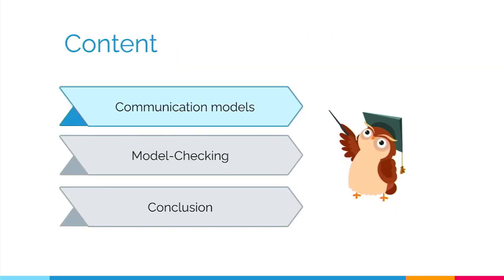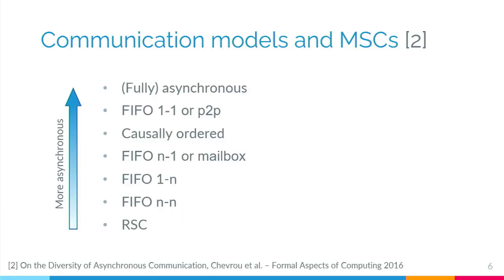After this introduction, I will talk about a couple of the communication models we considered. When I say communication model, I mean the thing that defines constraints on the order in which messages must be sent and received. Here you can see a quick overview of the seven communication models we considered, ranging from fully asynchronous communication — the least restrictive — to RSC, which stands for realizable with synchronous communication, very close to synchronous communication. These seven models were already considered in a paper called 'On the Diversity of Asynchronous Communication' by Chevroux and others, but under a different point of view, leading to some different results.